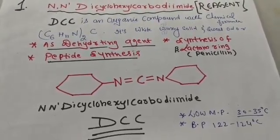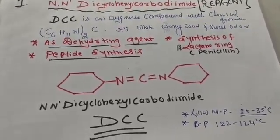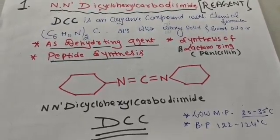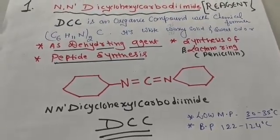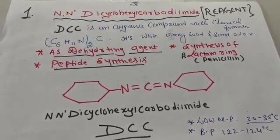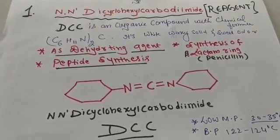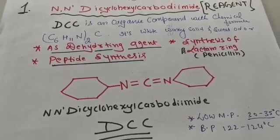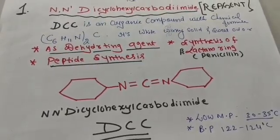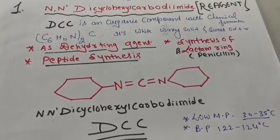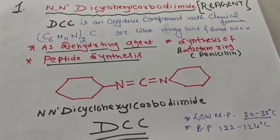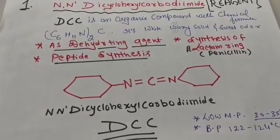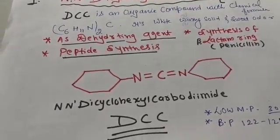Its physical constants include a low melting point of around 30 degrees centigrade, and a boiling point ranging from 122 to 124 degrees. The main uses of this reagent are: it is mostly used as a dehydrating agent, it is used in peptide synthesis, and it also helps in the synthesis of the lactam ring in penicillin.